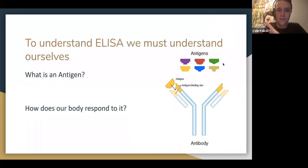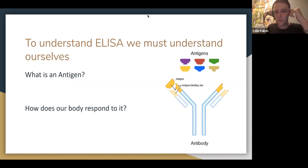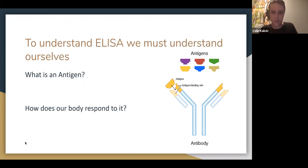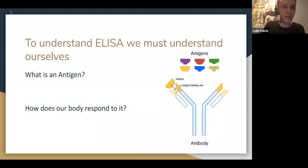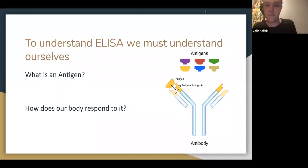An antigen is pretty much anything foreign to the body that's perceived as a toxin. Like everyone's saying - bacteria, virus, those are antigens. Your body is going to have an immunoresponse to it, and that immunoresponse produces antibodies. So when we look back at what an ELISA is, we're using these antibodies in order to bind to antigens. If we had a virus we wanted to detect in a sample, we could run an ELISA and see if the antibodies bind and produce a signal.